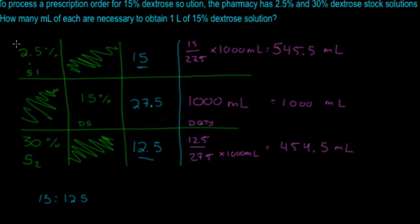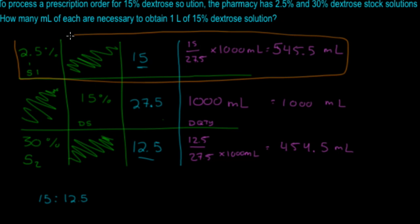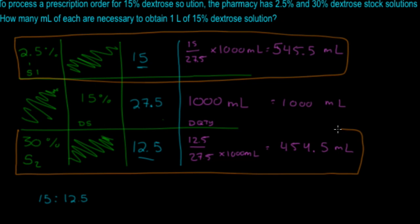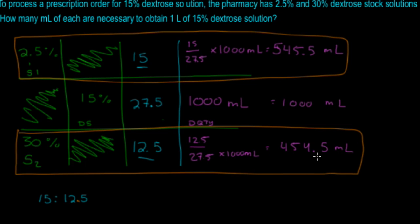Reading it left to right, the values pair up: you need 545.5 milliliters of the 2.5% solution and 454.5 milliliters of the 30% solution to get 1000 milliliters of the 15% solution. If the question asks for the ratio, that's 15 to 12.5. And that is how you do an alligation.